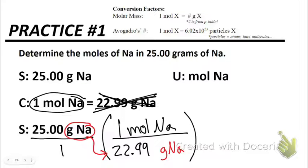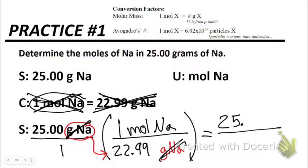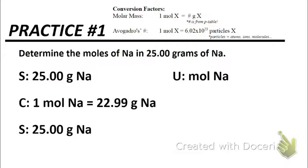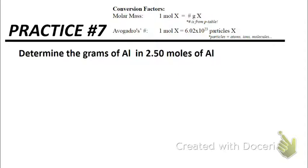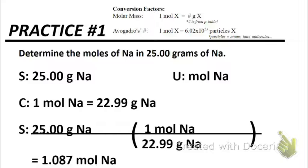So now I know that I've set this up correctly, and I've used both sides of my conversion factor. We can cancel grams on top with grams on the bottom, multiply across the top, is 25.00 moles of Na, multiply across the bottom, 22.99, and then we divide our top and bottom to get our final answer, which is 1.087 moles.